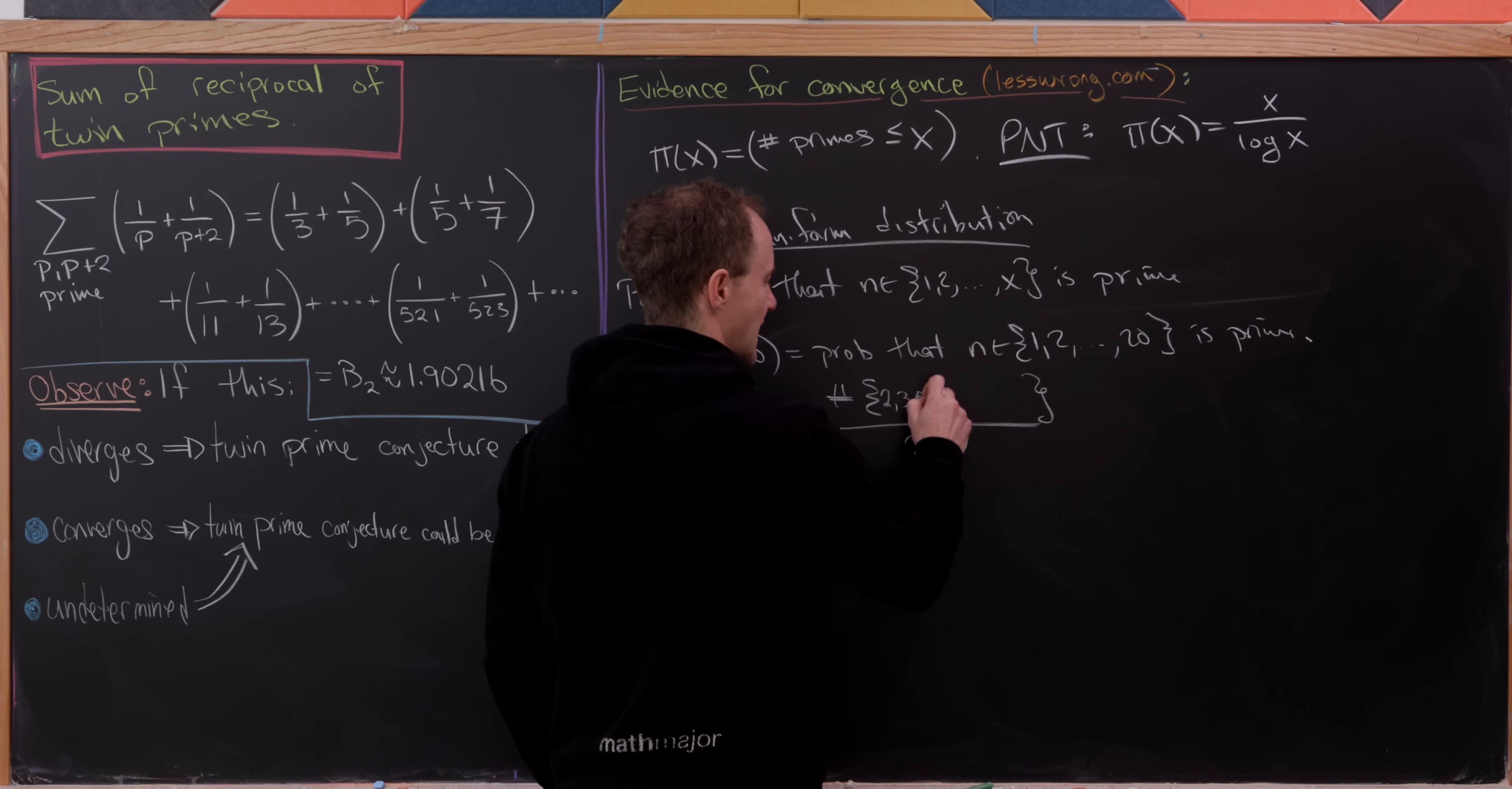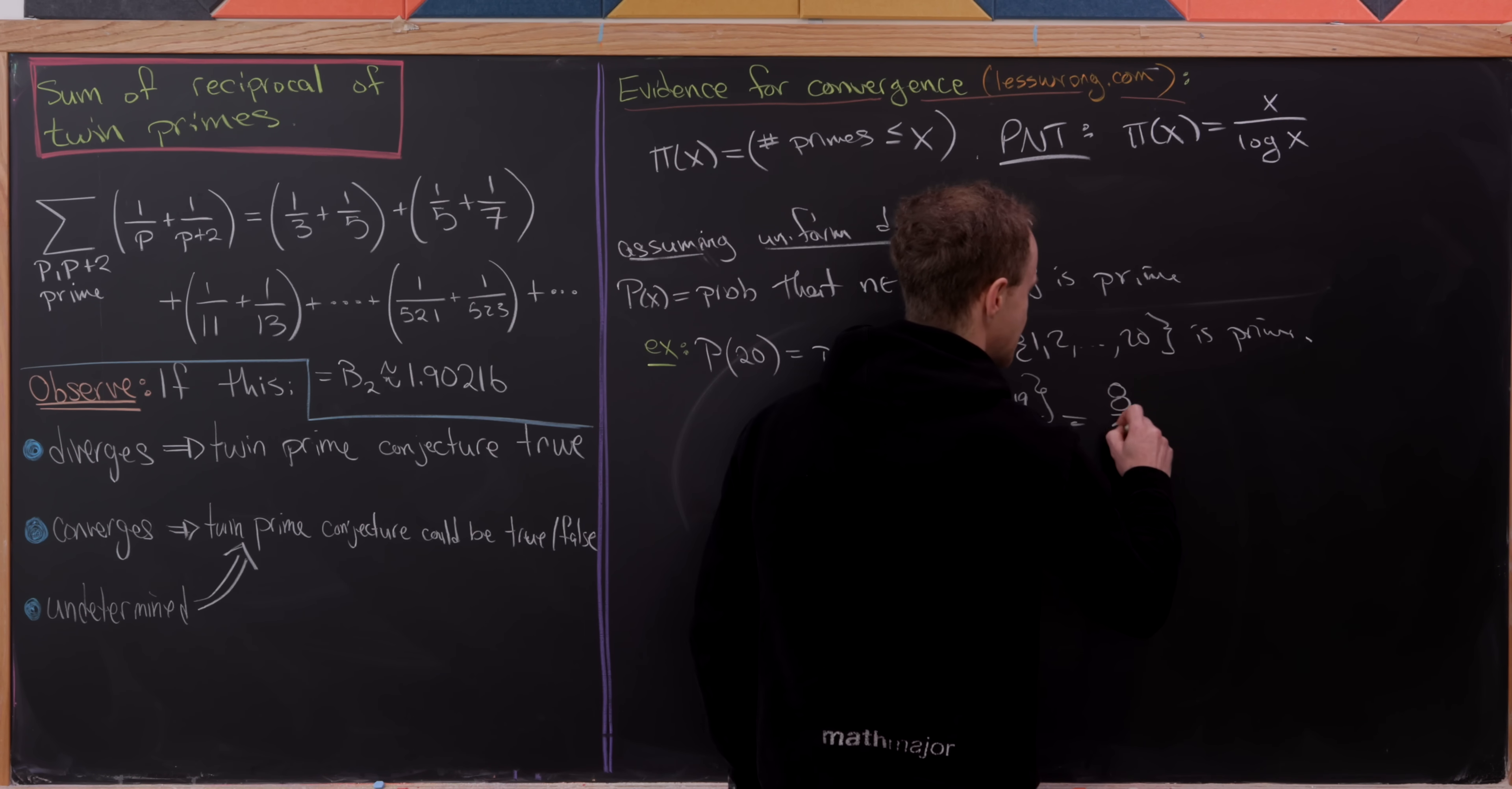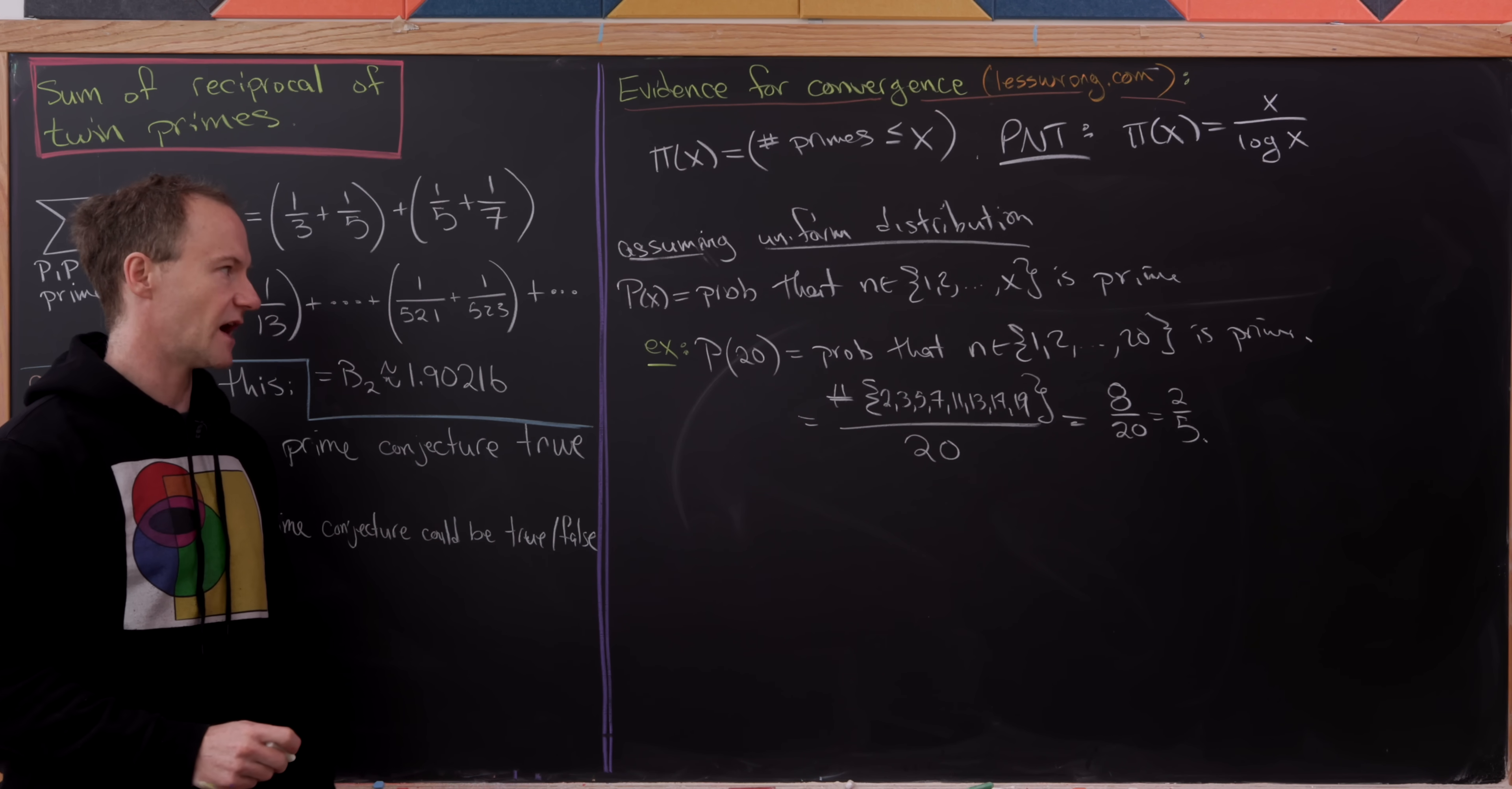So let's see. We have 2, we have 3, we have 5, we have 7, we have 11, we have 13, we have 17, and we have 19. So we can easily count this up: 1, 2, 3, 4, 5, 6, 7, 8. So this is equal to 8 over 20 which can obviously be simplified to 2 over 5. So P(20) is 2 over 5.